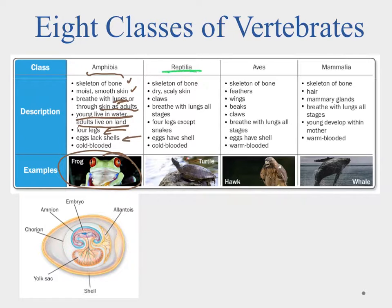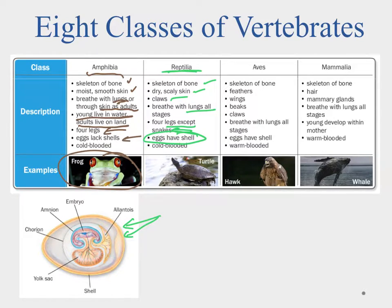Next are the reptiles in the class Reptilia. They also have a bony skeleton, but have dry scaly skin unlike the moist skin of amphibians, allowing them to hold more moisture inside. They tend to have claws, they breathe with lungs at all stages, and most have four legs — except for snakes, which have degenerated those legs away. Importantly, their eggs now have a shell — an amniotic shell with several layers — so they're able to lay eggs on land. This means reptiles can live their entire life on land; unlike amphibians which had to return to water to lay eggs.